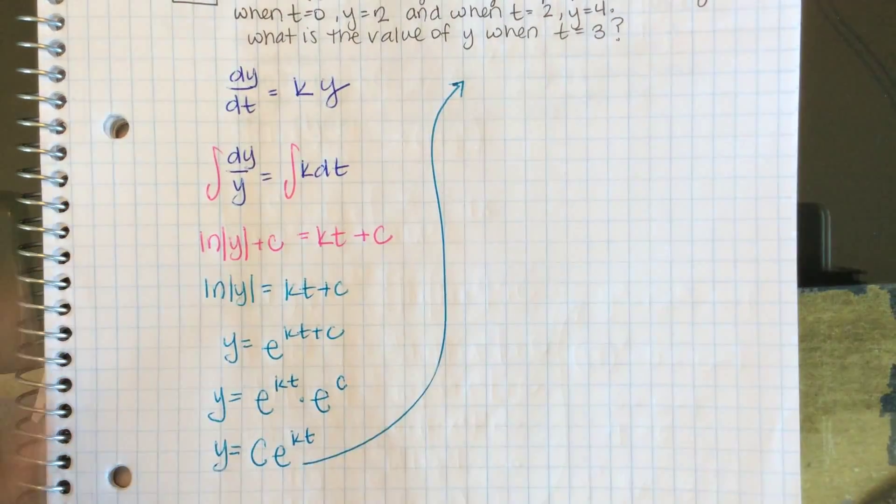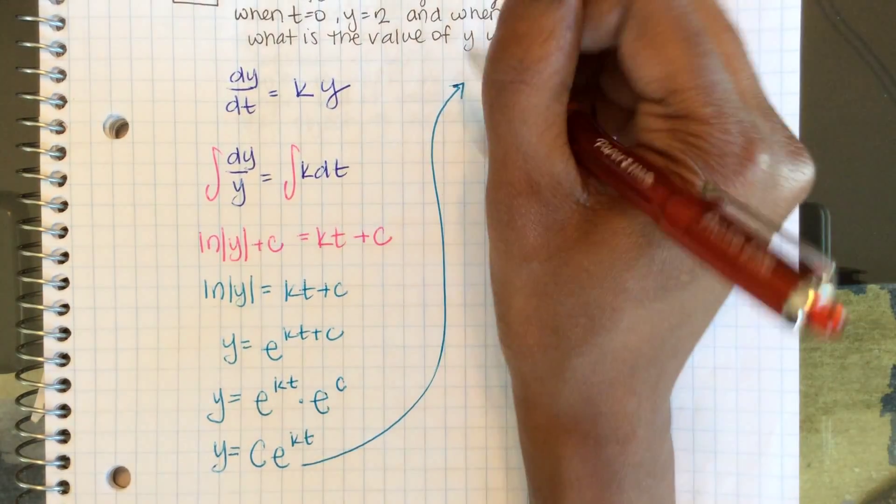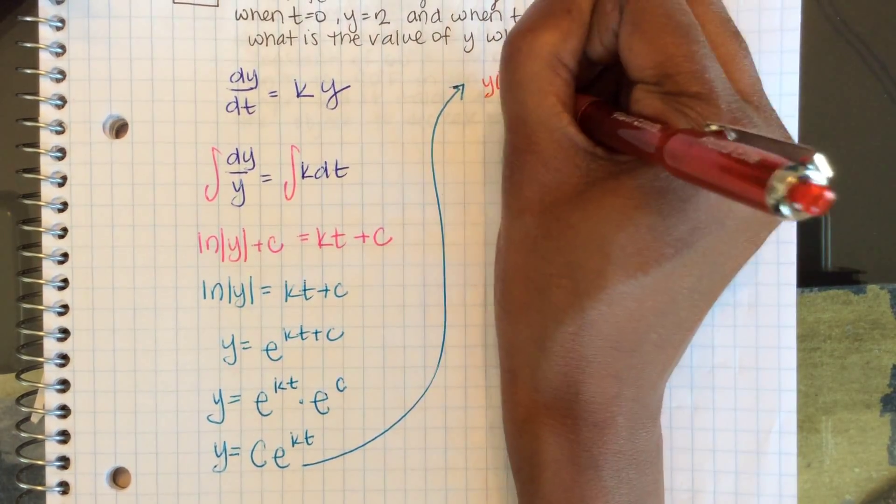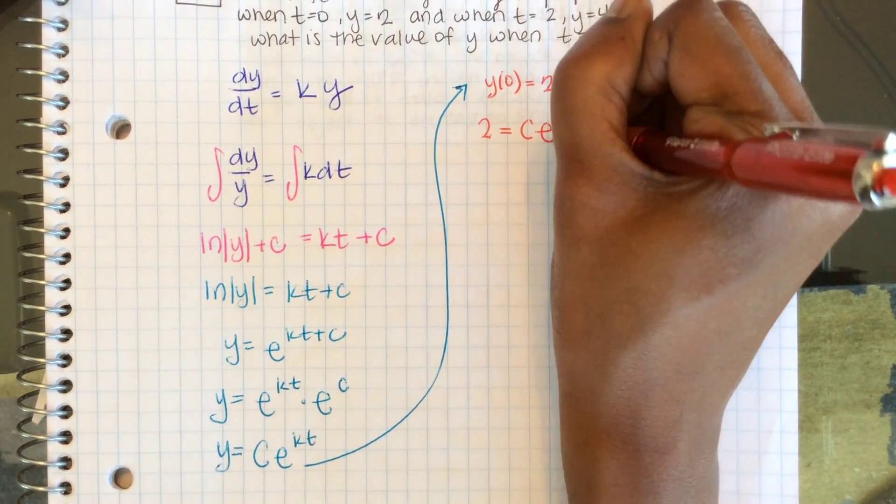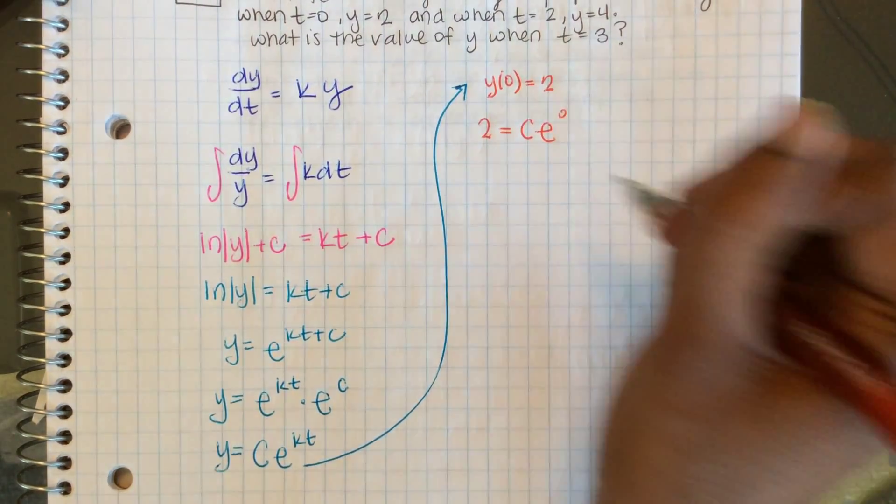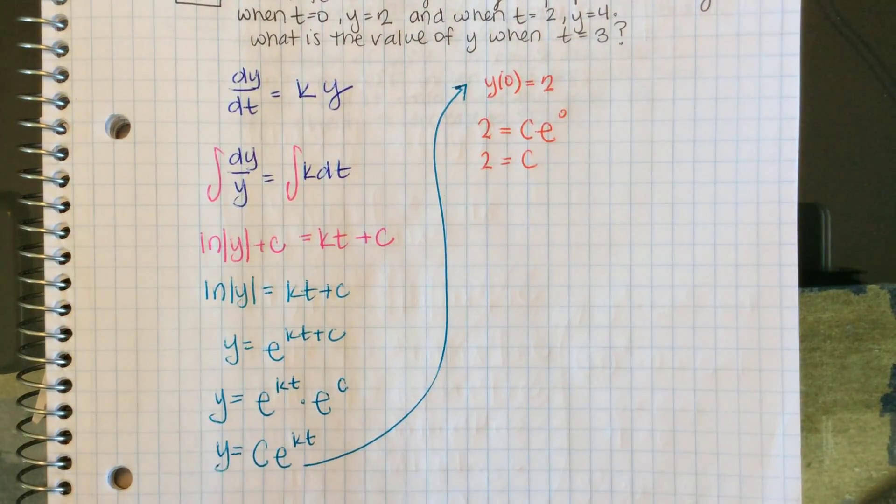Now they've given us initial conditions. When t = 0, y = 2. So 2 = C·e^0, which means C = 2.